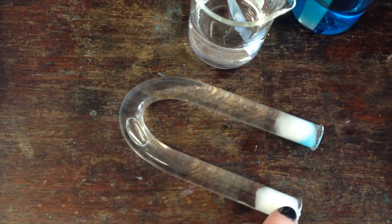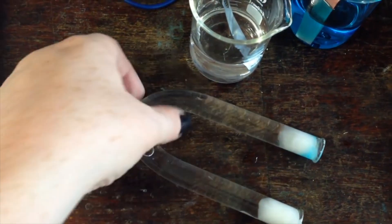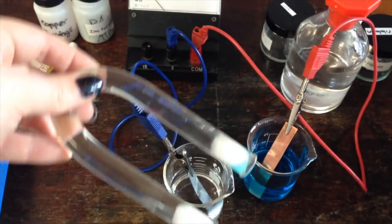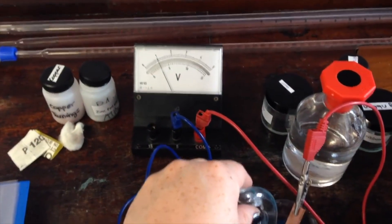Here I have our salt bridge. This is a plastic tube which is filled with sodium chloride and stoppered with cotton wool at either end. So I'm just going to pop this in here and then hopefully we should see a reading on our volt meter.